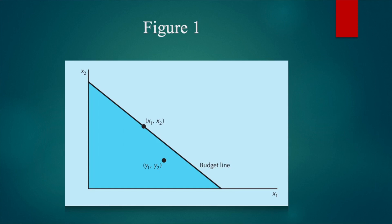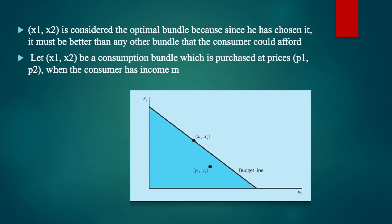The bundle x1, x2 that the consumer chooses is said to be revealed preferred to the bundle y1, y2, because y1, y2 was a bundle that the consumer could have chosen as it was inside his budget line, but he didn't do so. x1, x2 is considered the optimal bundle because the consumer has chosen it — it must be better than any other bundle the consumer can afford. x1, x2 must be preferred to any other bundle in the blue shaded area or on the budget line. This means that the total income is exhausted when the consumer purchases the bundle x1, x2.